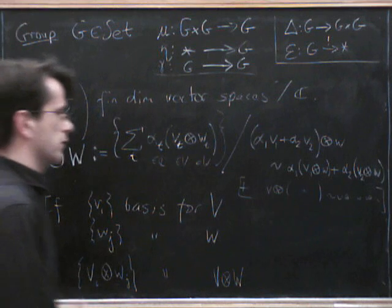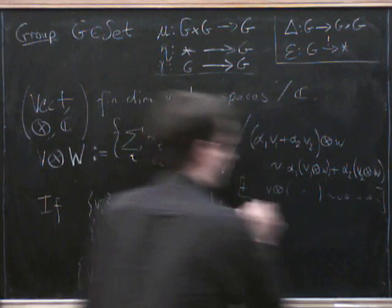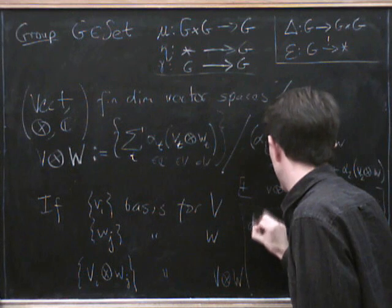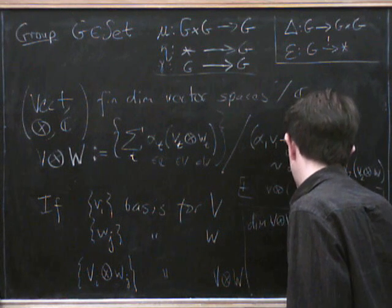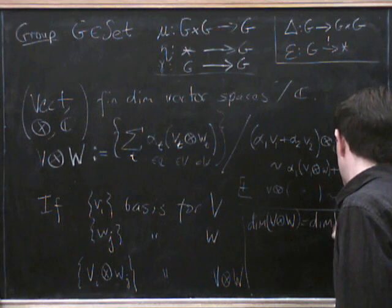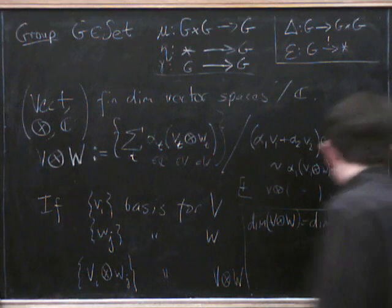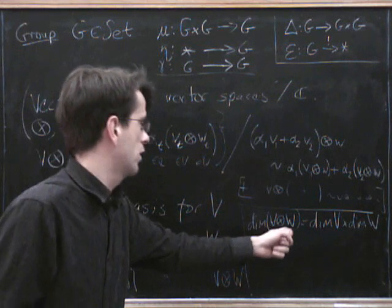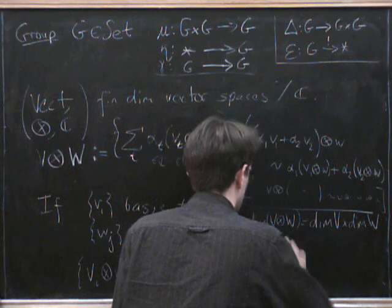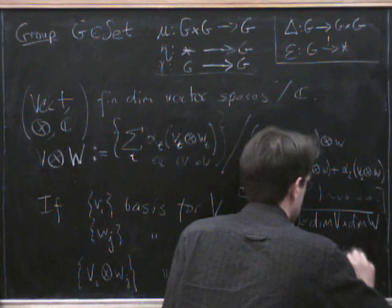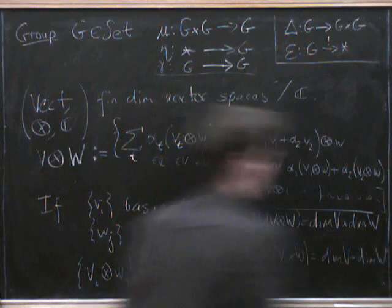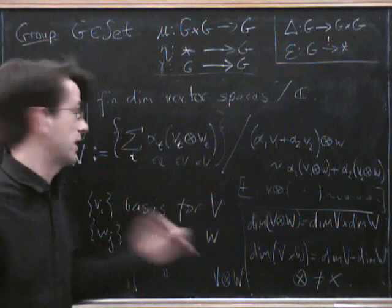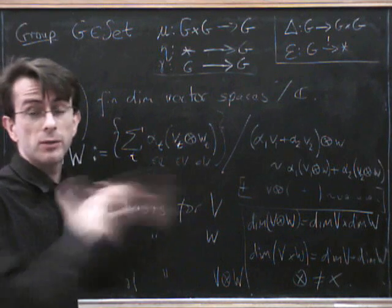So what's the sort of corollary of that? The point is that the dimension of V tensor W is equal to the dimension of V times the dimension of W. But that's not the same as the Cartesian product. So the Cartesian product or the direct sum, the dimension is the sum. So the corollary is that the tensor product is not the Cartesian product. So this is a category which is not Cartesian. So we'll say more about this next time.